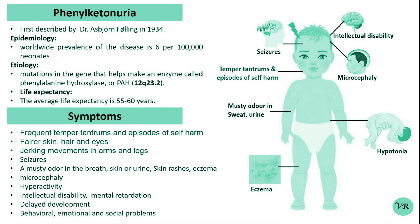The prevalence rate of PKU is 1 in 10,000 to 15,000 live births worldwide. It is more common in individuals of European descent, with estimates around 1 in 10,000, while the prevalence is lower in populations of Asian and African descent, with rates typically less than 1 in 10,000.